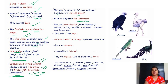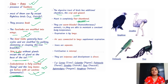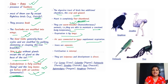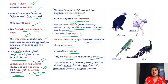The heart in Aves is completely four-chambered, meaning oxygenated and deoxygenated blood are completely separate. They are warm-blooded and able to maintain a constant body temperature. Respiration is by lungs; air sacs are connected to lungs to supplement respiration. Sexes are separate, fertilization is internal, oviparous, and development is direct. Examples: ostrich, vulture, parrot, and peacock.